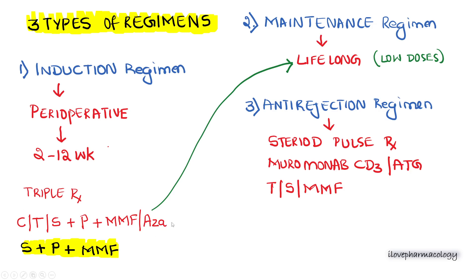This combination should be avoided in nephrotoxic-prone individuals because cyclosporine and tacrolimus are known to cause nephrotoxicity. In such cases, replace them with sirolimus plus prednisolone and mycophenolate mofetil, which is devoid of nephrotoxicity. During the maintenance regimen, continue the same drugs as the induction regimen but for a prolonged or lifelong duration at a lower dose.